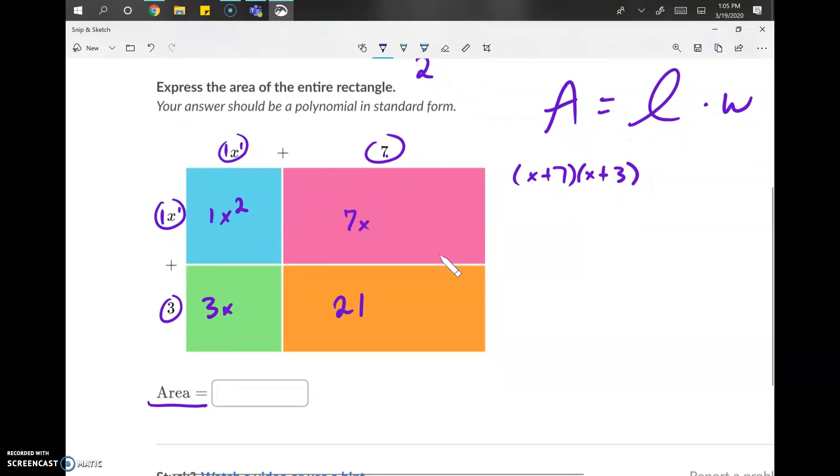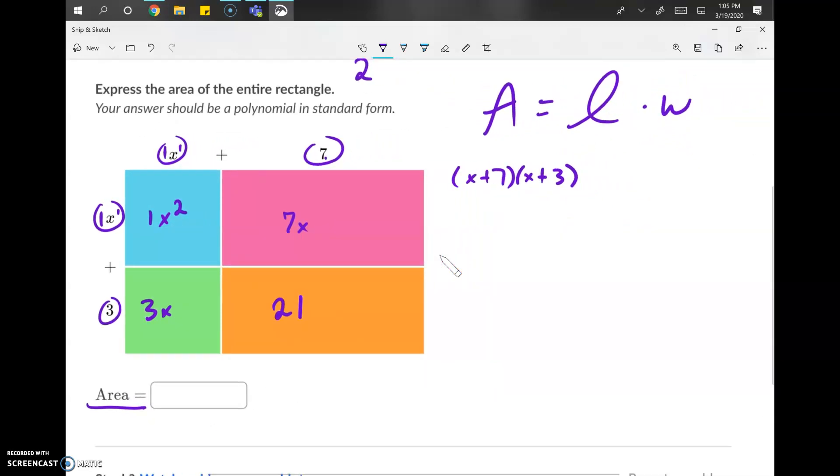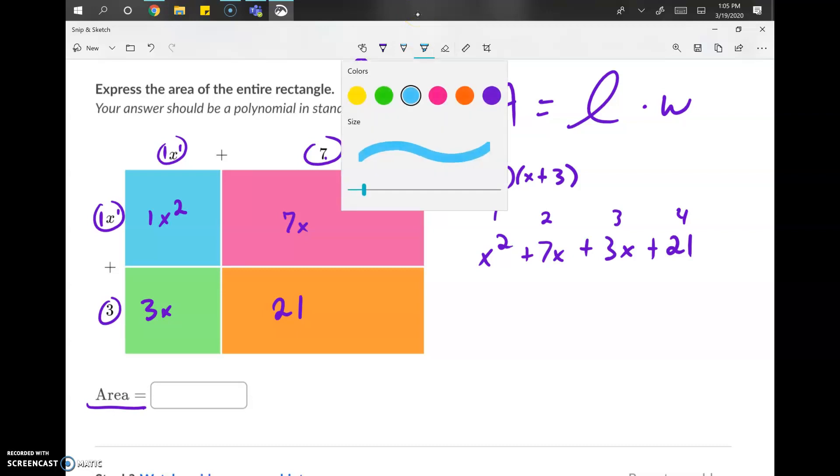Now that we've got the four boxes multiplied, we can go ahead and pull them out and rank them so we got x squared, plus we got seven x plus we got three x plus we got 21. When we look at this, we've got four things, which makes sense. Two times two would be four things. One, two, three, four. But two of these things are like terms, meaning that we can combine them together.